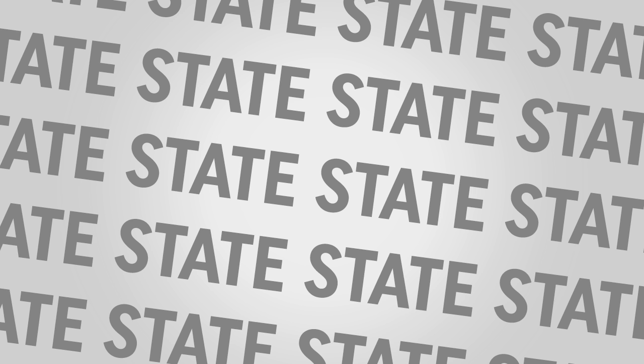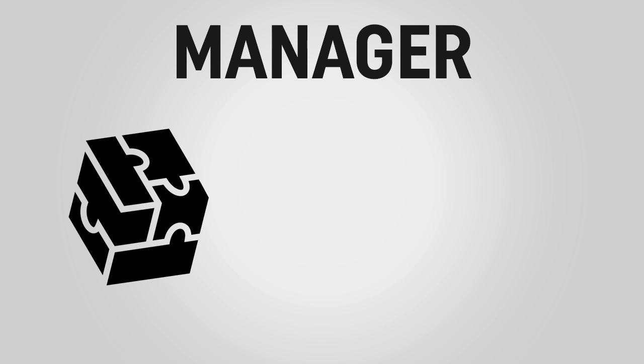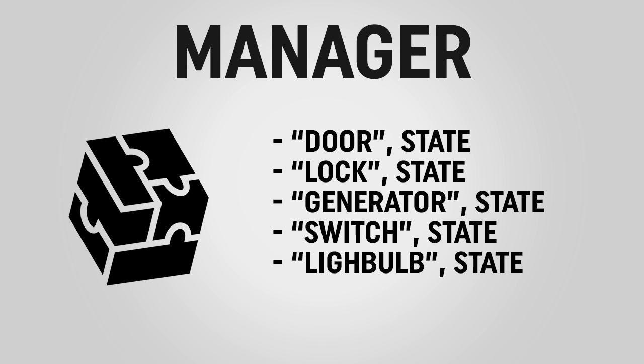With these states we need a way to keep track of them. We have two options: first, we could use a game manager; the other option is to use a component-based tracking system. The game manager would be one overarching script — probably with a static instance so we can call it from anywhere — that uses a dictionary to store a name for each state and track all of them. So we'd have a long list of states: the north door is in this state, the south door in this state, the light switch in this state, and so on.